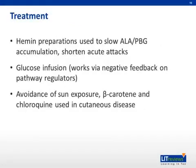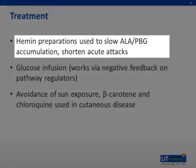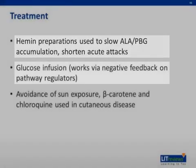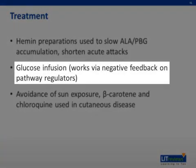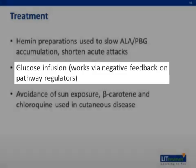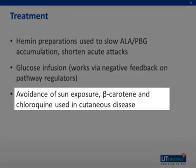Treatment of acute neurovisceral attacks includes hematin, which is essentially a preparation of heme that blocks ALAS1 production of ALA and consequently PBG, thereby shutting down the heme synthesis pathway which causes porphyria. This is often given with relatively high-dose glucose infusions, which further provides feedback and shuts down the involved pathways through feedback mechanisms. Treatment of cutaneous symptoms largely consists of avoidance of UV light and other supportive therapies.